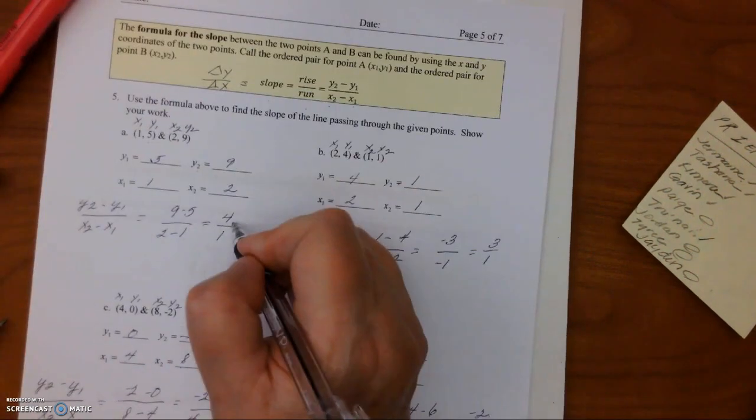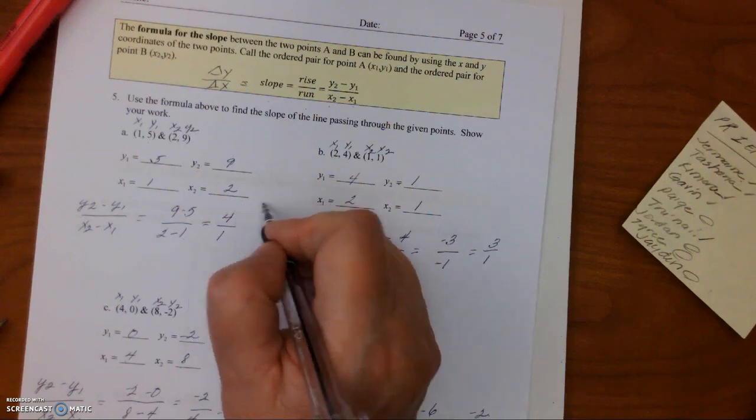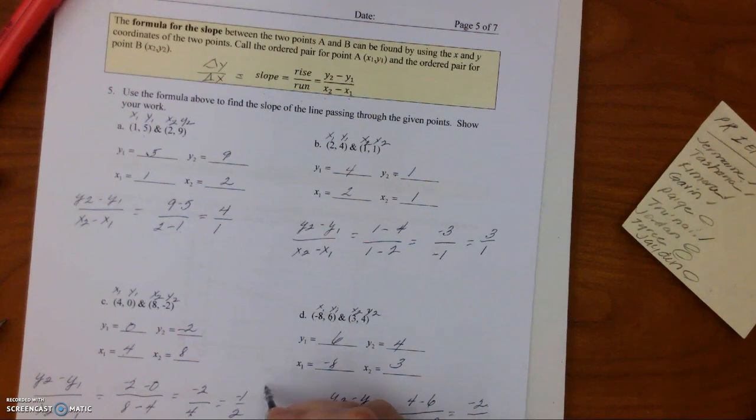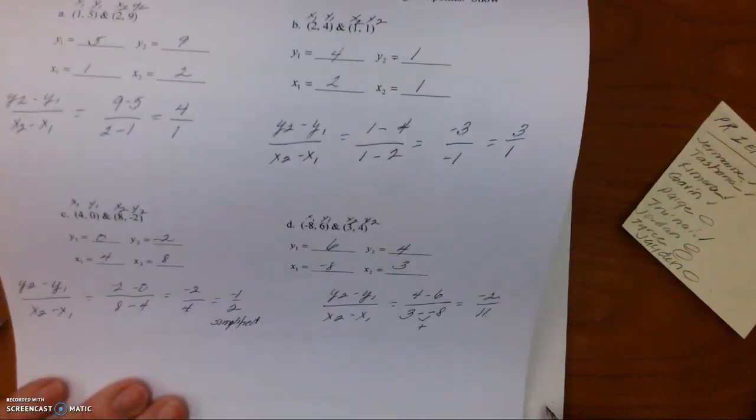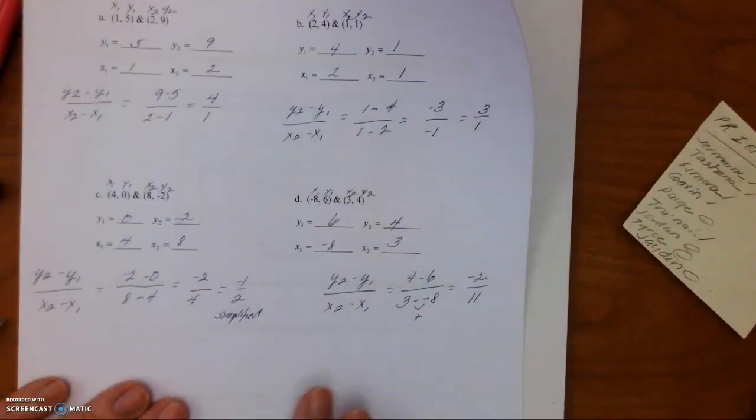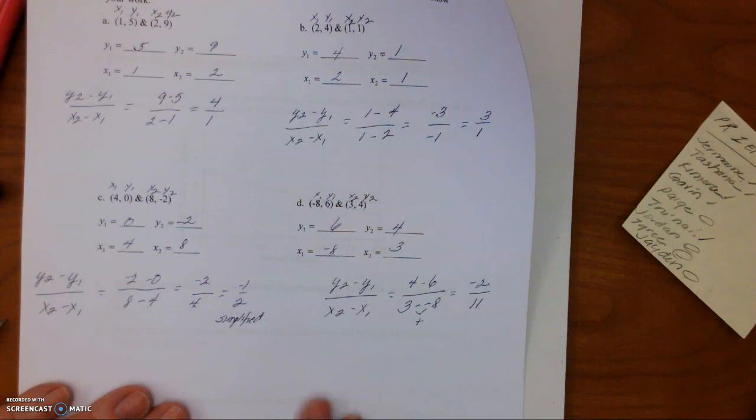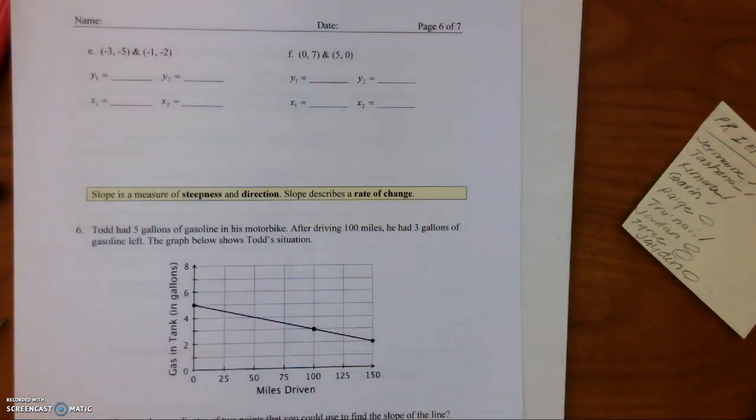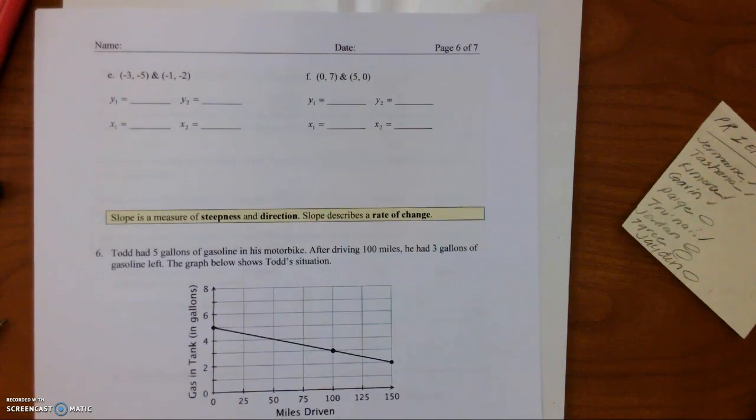So rise over run. You go up 4, you go over 1. You go up 3, you go over 1. You go down 1, you go over 2. You go down 2, you go over 11. If this is going too fast, take your time and look at it again. So now I'm going to do one more set on the next page.